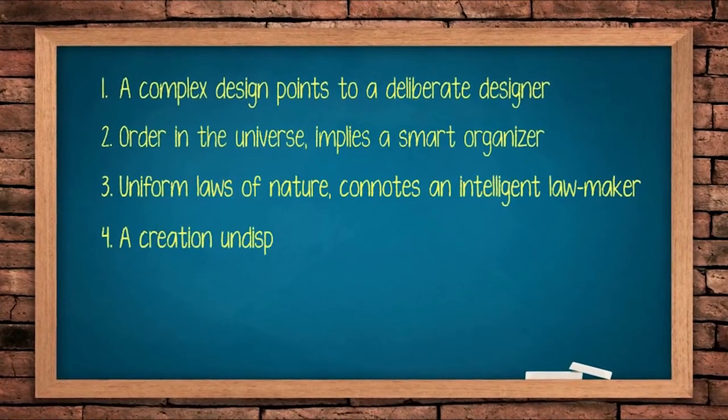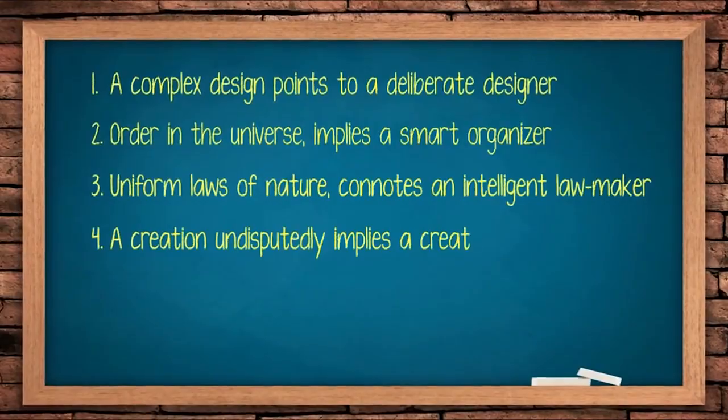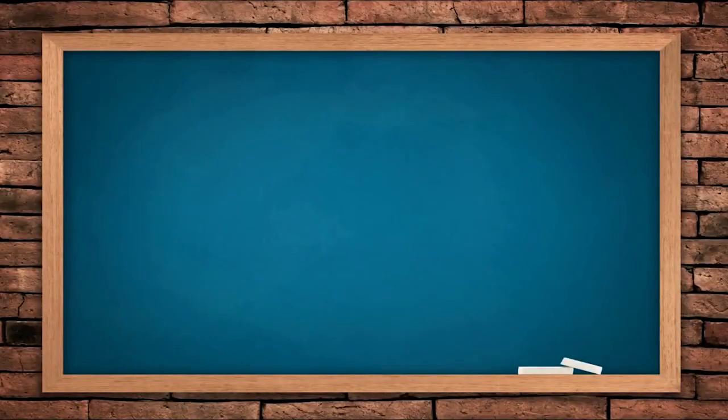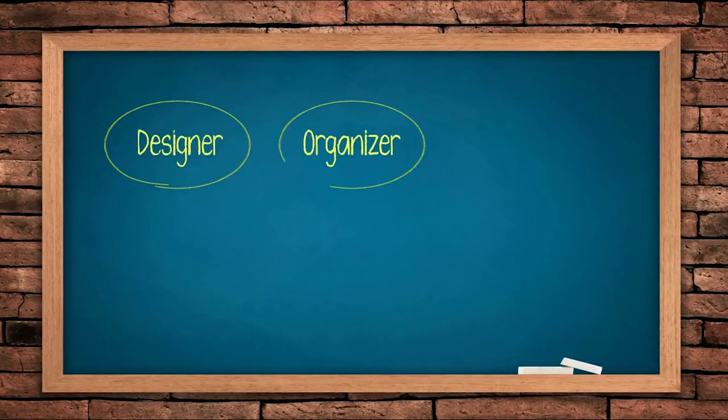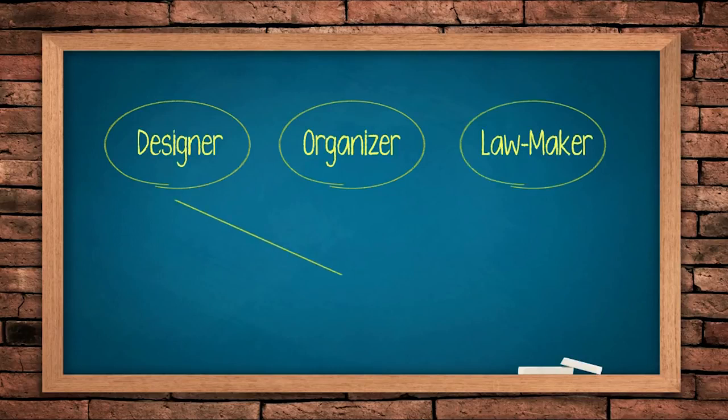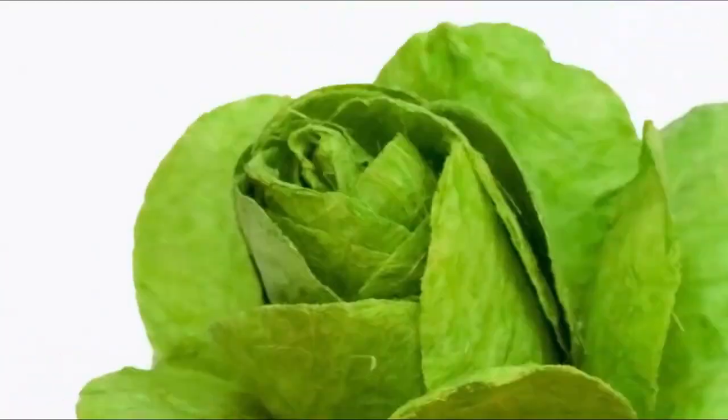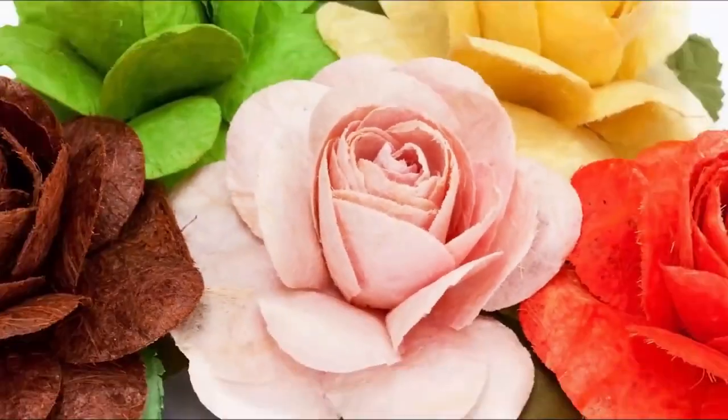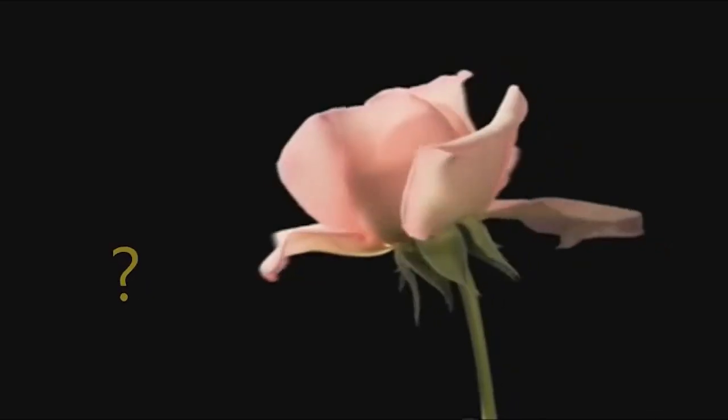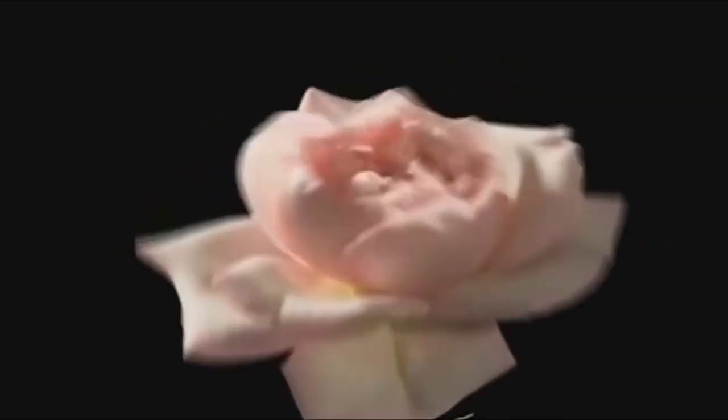A creation undisputedly implies a creator. Now if there is a designer, there is an organizer, there is a law-maker, then definitely when we see the entire universe, we can infer that there is a creator. When even a paper rose flower needs a creator, then how can the real rose flower be created by no one?